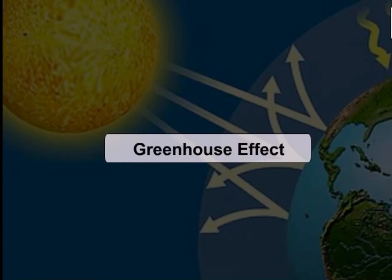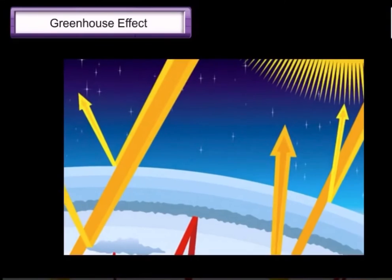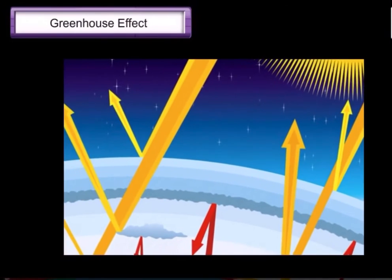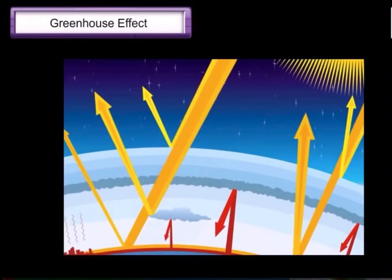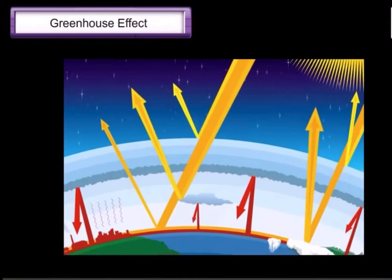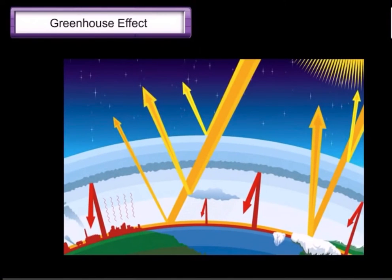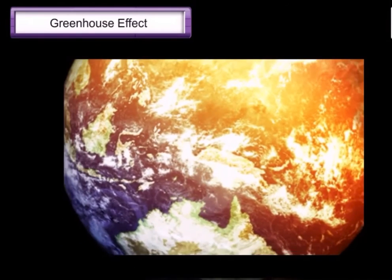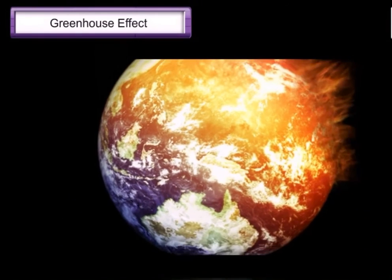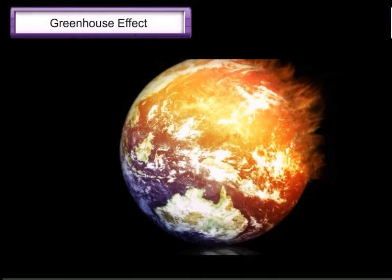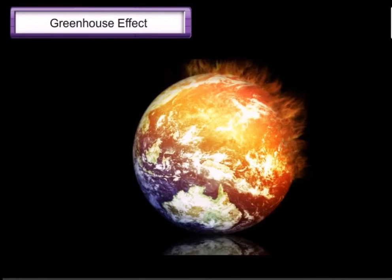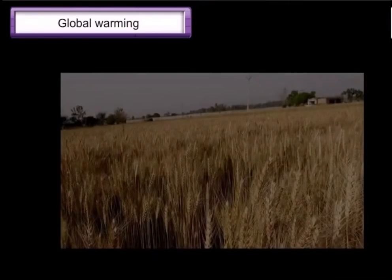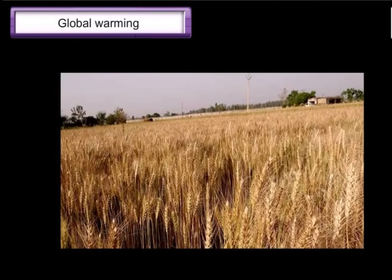The greenhouse effect is an increase in the concentration of carbon dioxide in the atmosphere leading to an increase in the temperature on the earth. This is called the greenhouse effect, and it leads to global warming. The heating up of the earth's atmosphere due to the trapping of infrared radiation by carbon dioxide in the atmosphere is known as global warming.